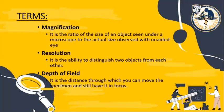The next term is resolution — it is the ability to distinguish two objects from each other, so it's all about the details. This must be a combination of magnification plus resolution for us to clearly see the object under the microscope. Then depth of field: it is the distance through which you can move the specimen and still have it in focus. That is why we have different adjustment knobs where we can move our specimen without losing focus or clarity.